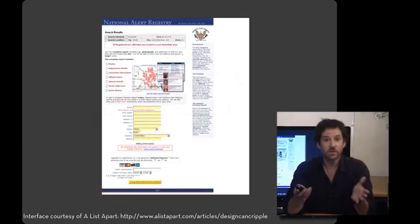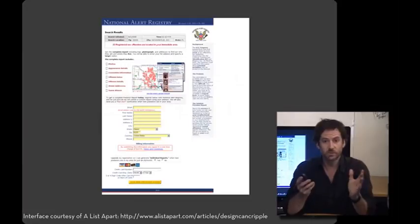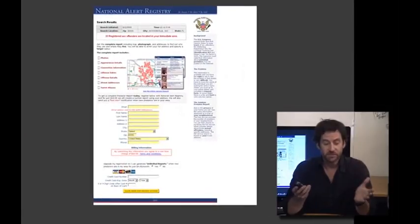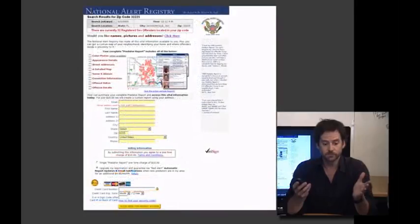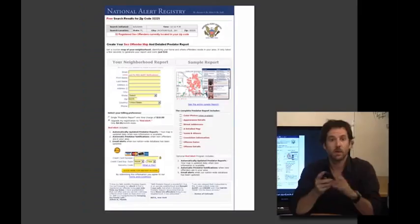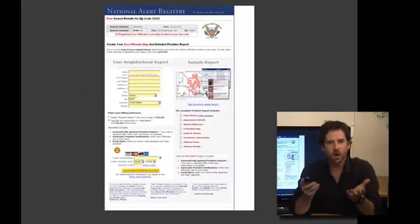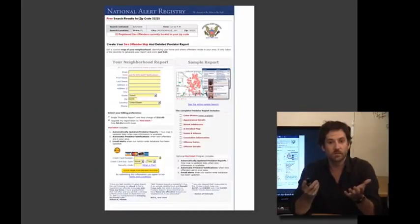Let's start with an example. Here's a website for the National Alert Registry, which provides information on sexual offenders. This is the first version of the site, here's a second version, and here's a third version. In this third version, it was changed to a two-column format, and so the intuition behind that was to see whether getting more content above the fold on the first screen would help.